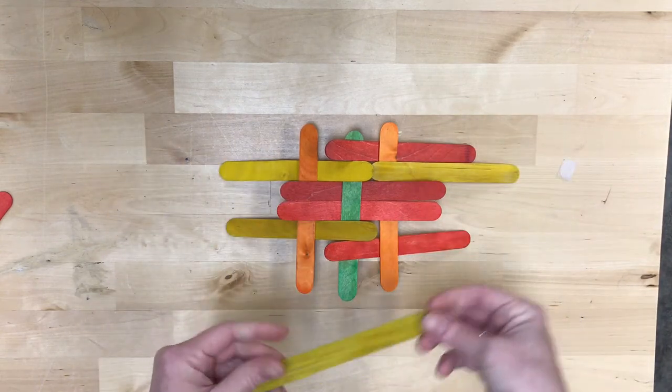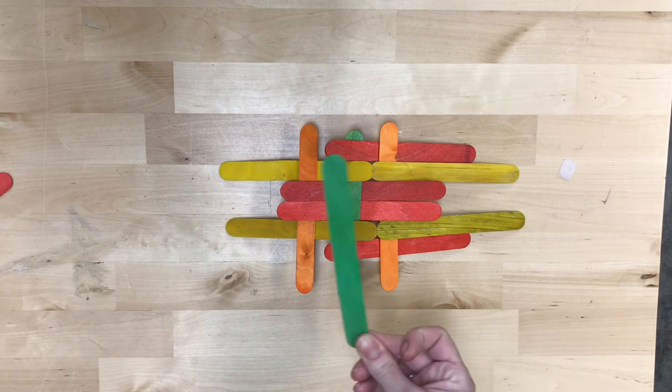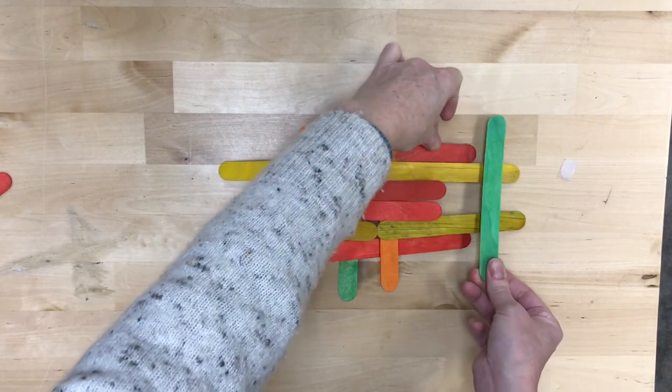The self-supporting bridge doesn't need any glue, doesn't need any ropes. It's just making use of friction and tension.